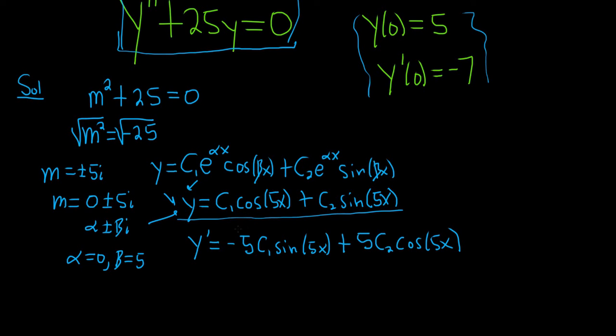Now we can use our initial conditions. Let's use the first one, y(0) equals 5. We have y(0) equals c₁cos(0) plus c₂sin(0), which equals 5.